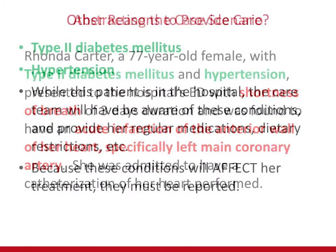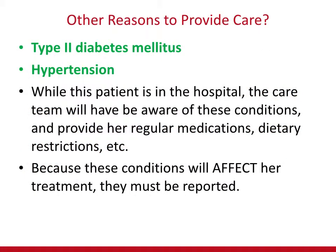Let's think about this. They are both what are known as chronic systemic conditions — type 2 diabetes mellitus and hypertension. While Rhonda Carter is in the hospital, the care team — nurses and doctors — will have to be aware of these conditions while performing the catheterization. They will need to provide her regular medications. If she has dietary restrictions — many patients with hypertension cannot have salt, and many diabetics cannot have sugar — they have to attend to these conditions. Because they will directly affect her treatment and care while in the hospital, they must be reported.